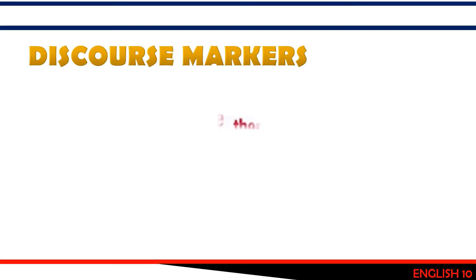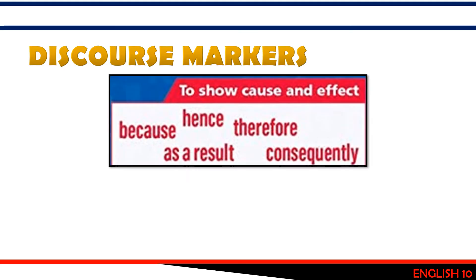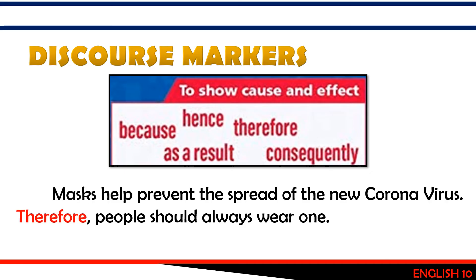The second group of discourse markers is used to show cause and effect. These include: because, hence, therefore, as a result, and consequently. Example: 'Masks help prevent the spread of new coronavirus. Therefore, people should always wear one.' Here, 'therefore' is used to show cause and effect.